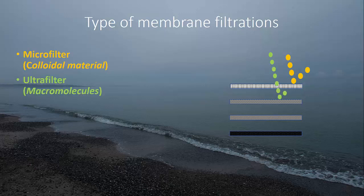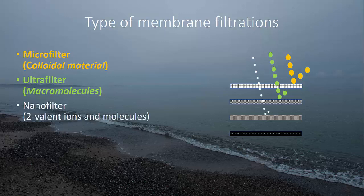The next step is ultrafilters, which can remove macromolecules. An ultrafilter is used for sewage treatment in membrane bioreactors, or MBRs. With an ultrafilter in an MBR you can remove very small things such as viruses and bacteria. Ultrafilters are also very importantly used as a pretreatment step for the next two types of membranes: nanofilters and reverse osmosis.